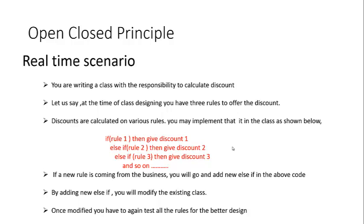Imagine that rules for discount keep coming from the business — the number of times you have to go and modify the existing class. While adding rule 10, you may not want to retest rule 1, rule 2, rule 3 again. So Open Close Principle says that we should not implement this kind of scenario by modifying the class.